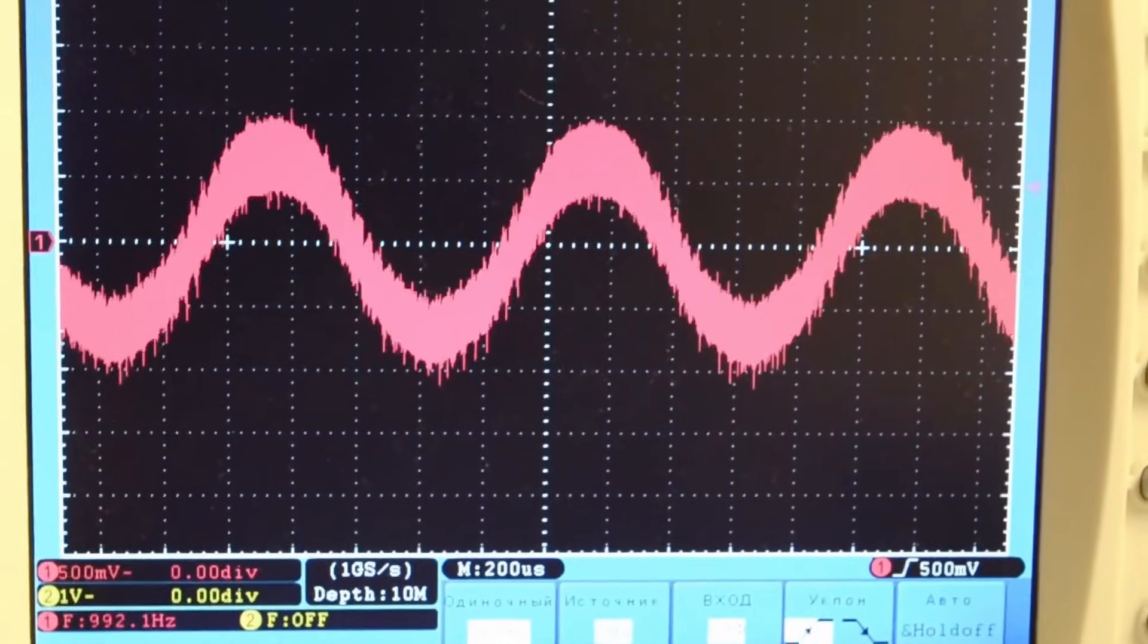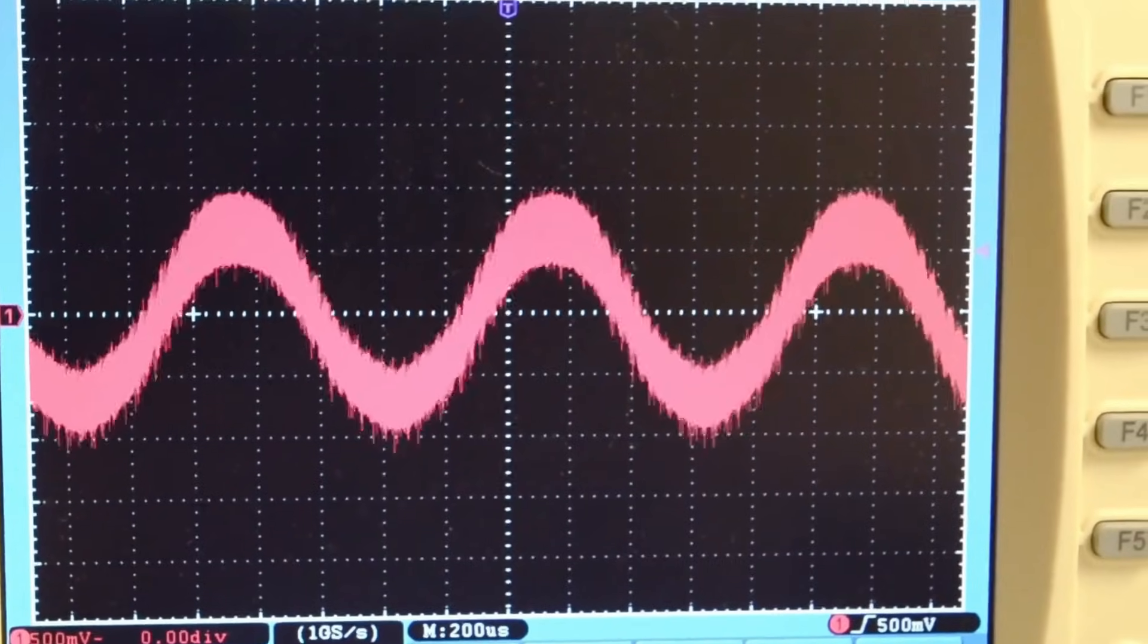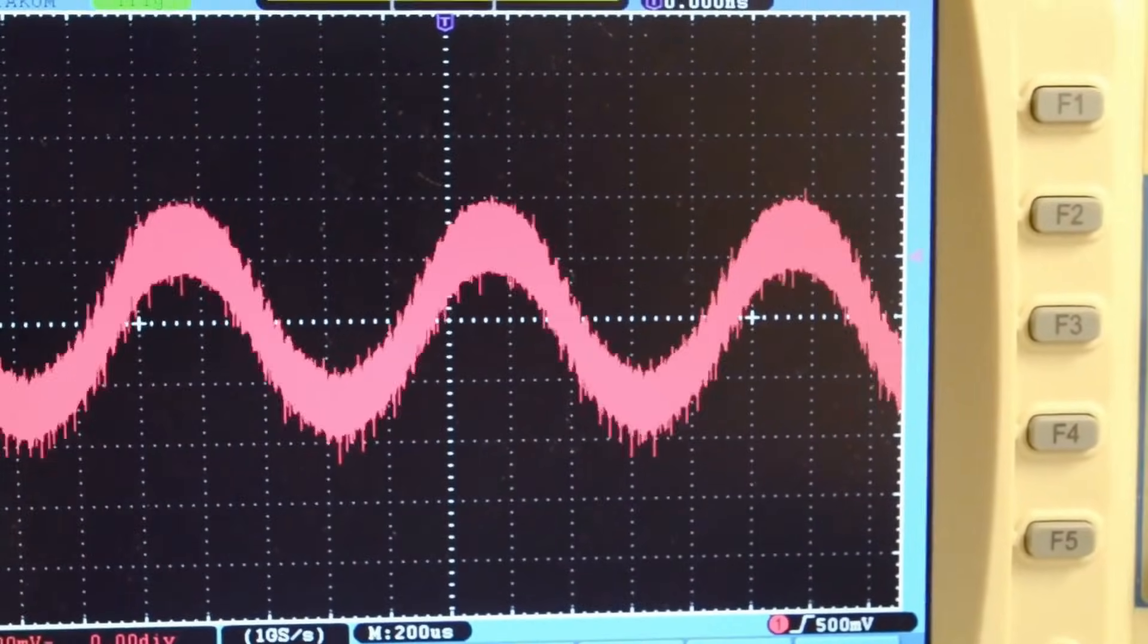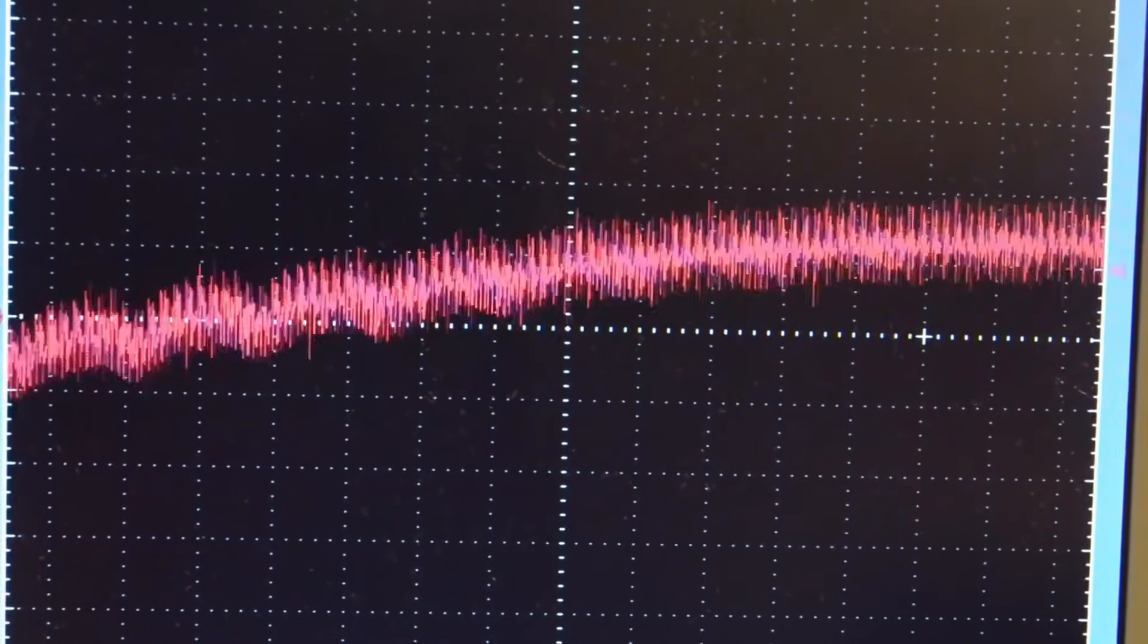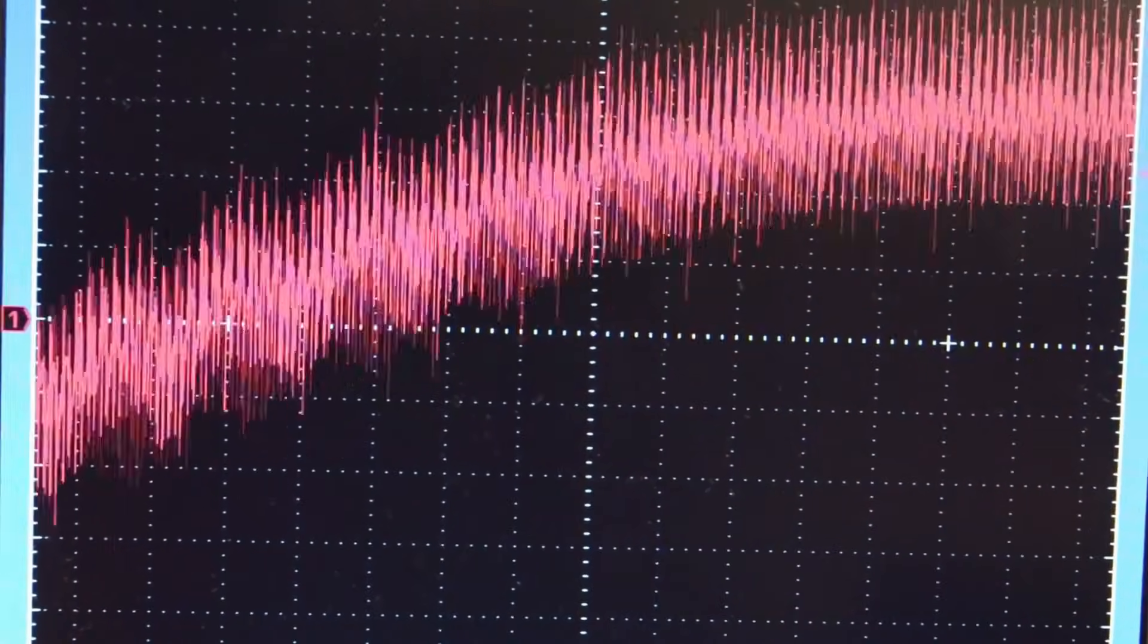You can also see a high level of high-frequency noise. This is all a consequence of prototyping with long wires in the output section. In a real circuit, LC filters are laid out as compactly as possible.